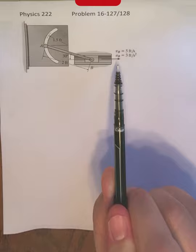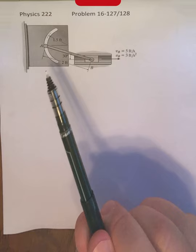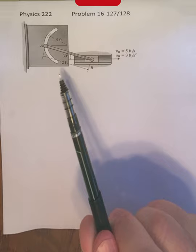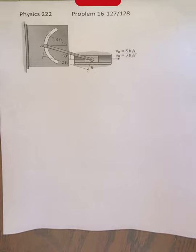What makes this problem different from some of the previous ones is that we have point A moving along this slot here, which is of a circular cross-section or circular arc with a radius of one and a half feet. So that'll become important later when we look at the acceleration of point A.